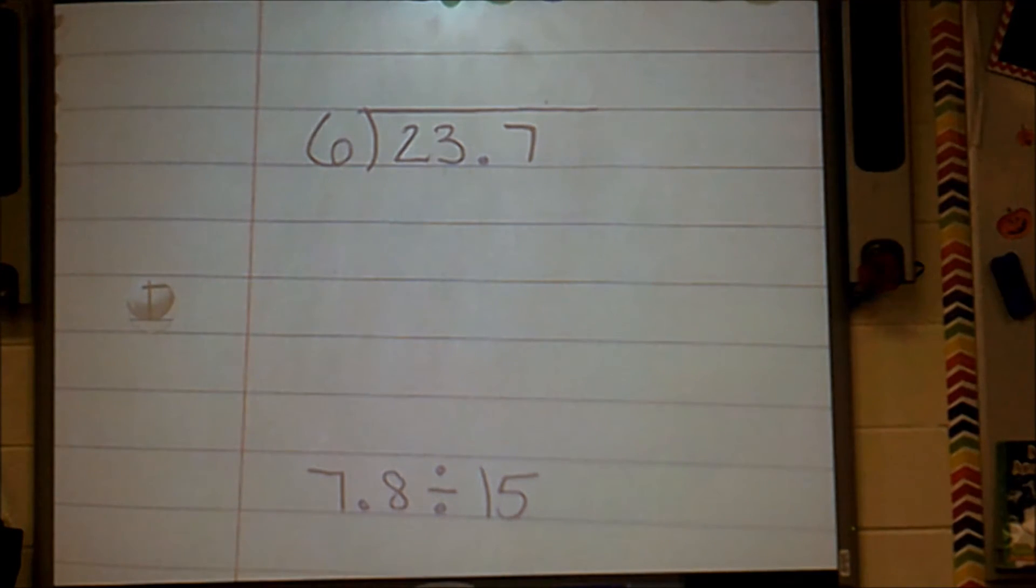Take this problem, for example. First thing I'm thinking is I don't have any decimals in my divisor, so I'm good to go there. I do have a decimal in my dividend, so I need to make sure that I whoop, UFO that baby right up above our cave. Do that right now.